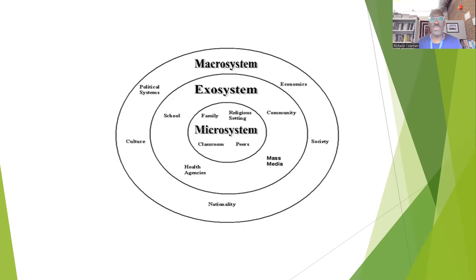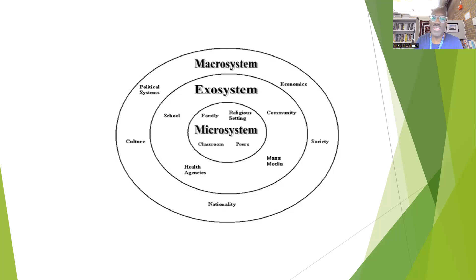The next level up is labeled exosystem on the slide, but it should be meso — this is a dated slide. Microsystems are people: yourself, or people that you see every single day. They're part of your system — people who live in your household, kids, your significant others, your spouses, your animals, the whole nine yards.